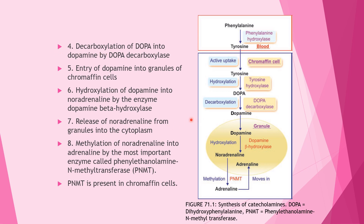Fourth, decarboxylation of DOPA into dopamine by DOPA decarboxylase. Fifth, entry of dopamine into granules of the chromaffin cells. Sixth, hydroxylation of dopamine into noradrenaline by the enzyme dopamine beta-hydroxylase. Seventh, release of noradrenaline from the granules into the cytoplasm. Eighth, methylation of noradrenaline into adrenaline by the enzyme phenylethanolamine N-methyltransferase (PNMT), which is present in chromaffin cells.